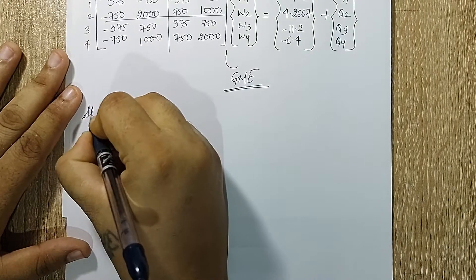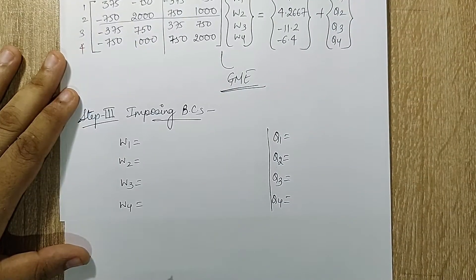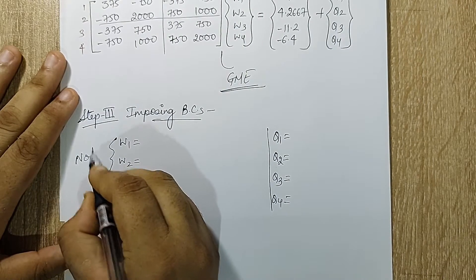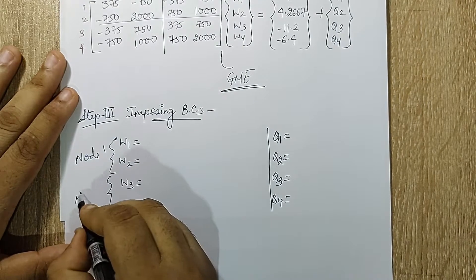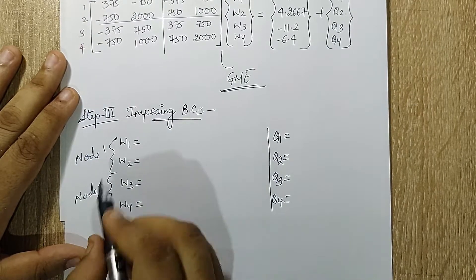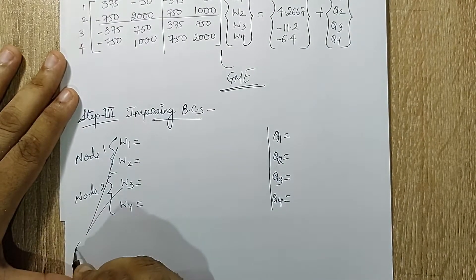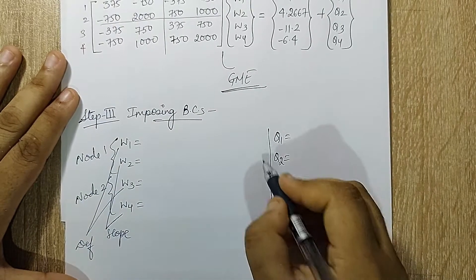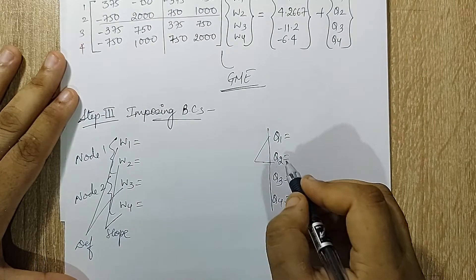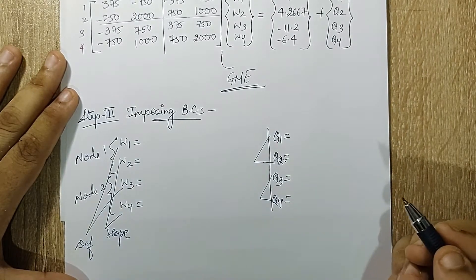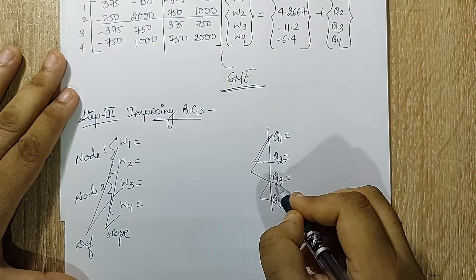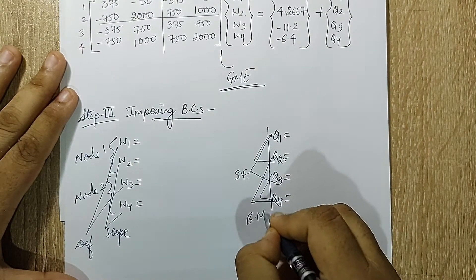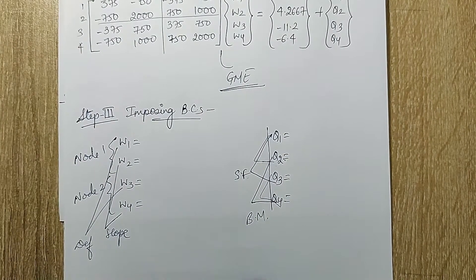These are the variables that I have here. 1 and 2 will indicate node 1, 3 and 4 will indicate node 2. In that also, 1 and 3 will indicate deflection, 2 and 4 will indicate the slope. 1 and 2 here will indicate node 1, 3 and 4 will indicate node 2. 1 and 3, q1 and q3, will indicate shear force. q2 and q4 will indicate bending moment. So you need to remember these terms. They are not changing from UDL to UVL; they are going to remain the same.